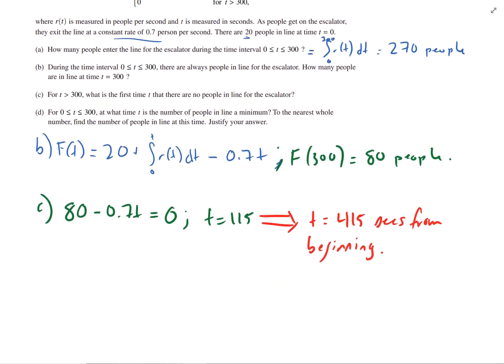And the last part, part D. When is the number of people in line at a minimum? So we have this function, F of T, so we're just going to rewrite it. F of T equals 20 plus 0 to T, R of T, DT, minus 0.7 T.